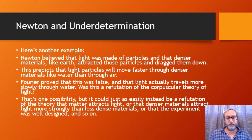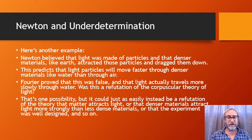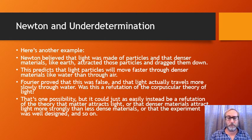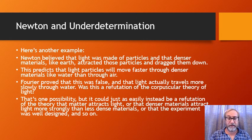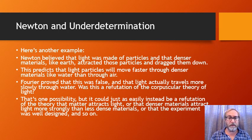One more example: Newton wasn't right about everything. He thought light was made of particles attracted to matter by something like gravity — so the Earth attracts light particles. If that were true, it would predict that light particles travel faster through denser materials like water than through air. Foucault did an experiment proving this was false: light actually travels more slowly through water. So was Newton's theory false?